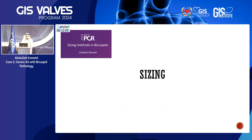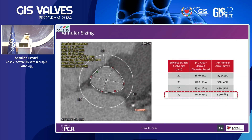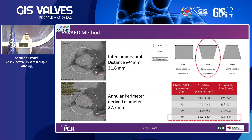Sizing in a bicuspid anatomy can be divided into annular sizing and supra-annular sizing. Annular sizing is what we do with tricuspid anatomy — you trace the annulus and derive the parameter area or perimeter-derived diameter based on your valve of choice. For supra-annular sizing, there are four methods. In my opinion, the most reproducible and easy to use is the Bavard method.